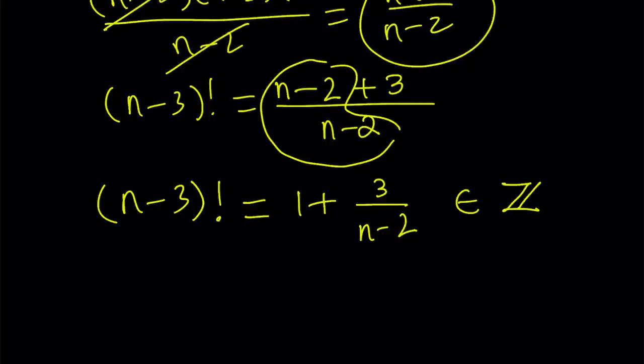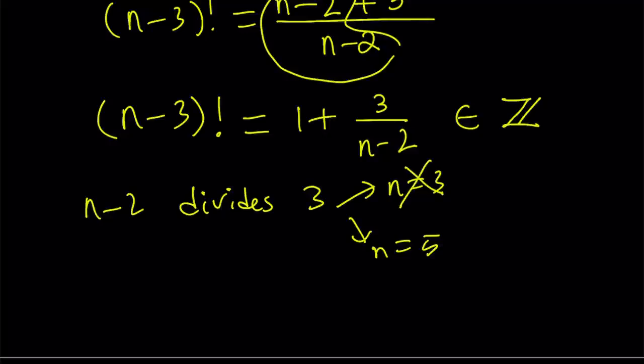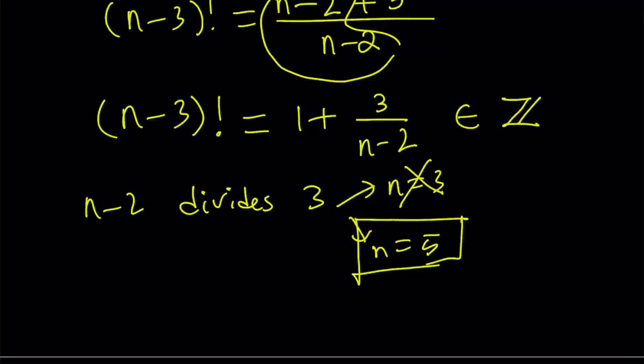So how can this be an integer? Well, n minus 2 must be a factor of 3 or a divisor of 3. So in other words, n minus 2 divides 3. But in order for n minus 2 to divide 3, n must be either 3 or 5. But if n is equal to 3, you're going to get from here 1 plus 1, which is 2, and on the left-hand side you're going to get 0 factorial. So n equals 3 is not going to work, and we are left with the only solution n equals 5, and it actually does work. And this brings us to the end of this video.